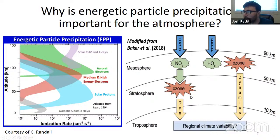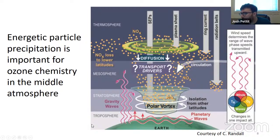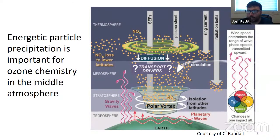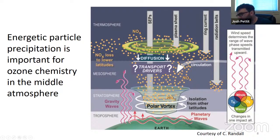The ozone destruction can cause a lot of other changes, which I want to touch on briefly before going into some of the modeling studies. This is an all-encompassing busy plot of the effects of energetic particles on the entire system. It's long been thought that energetic particle precipitation is important for ozone chemistry in the middle atmosphere, and that's absolutely true. But in addition to that, we've started to discover that changing the ozone in the stratosphere actually has impacts not just on the ozone, but also on the temperature and the wind field of the stratosphere.